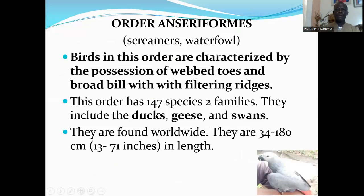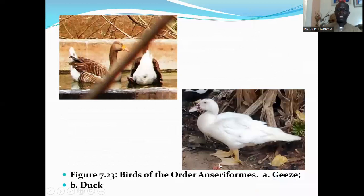The next order is Order Anseriformes, which consists of screamers and waterfowl such as ducks, geese, and swans. Birds in this order are characterized by the possession of webbed toes and a broad bill with filtering ridges. This order has 147 species in two families, including ducks, geese, and swans. They are found worldwide and are 34 to 180 centimeters in length. Here are pictures of birds in Order Anseriformes — geese and ducks.